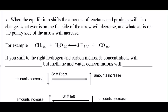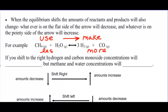We talked about changing concentration and the rule: if you increase concentration, you go away from what you increase. If you decrease concentration, you go toward what you decrease. What you need to know before we move on is that if you shift the equilibrium, then you change the amounts of everybody in the container, and we need to know how they change.